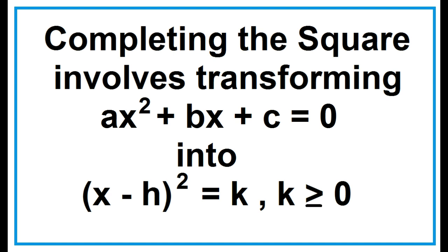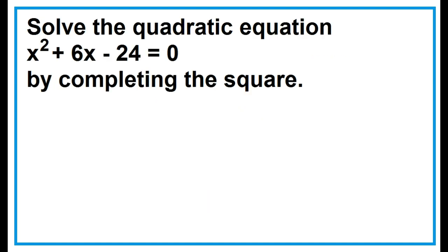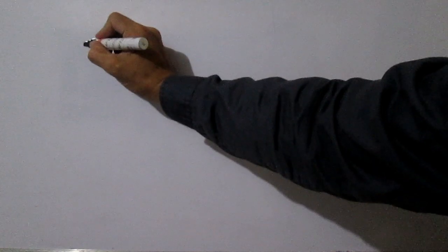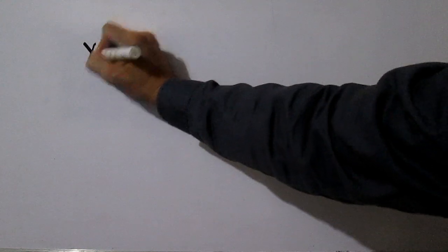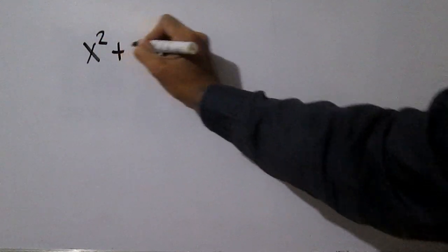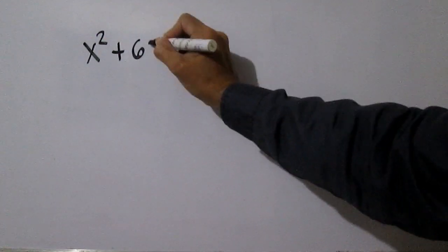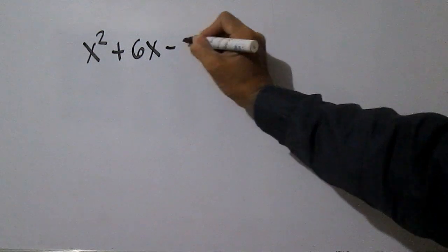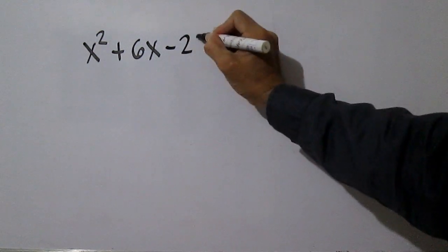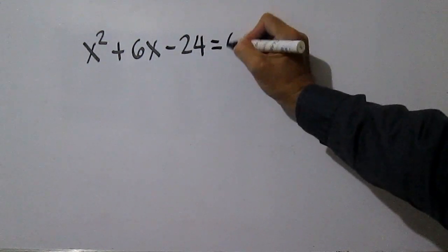Here's an example of solving a quadratic equation by completing the square when a is equal to 1. Solve x squared plus 6x minus 24 equals 0. Here, a is equal to 1, b is equal to 6, and c is equal to negative 24.